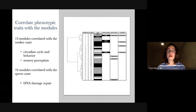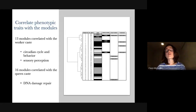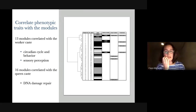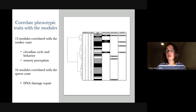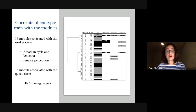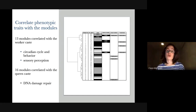Once we had all of these modules, we correlated them with the phenotypes, taking into account the phylogeny since we had many species. We wanted to see if the expression pattern of each module would be correlated with one or the other caste. Indeed, most of our modules were associated with either the queen or the worker caste.